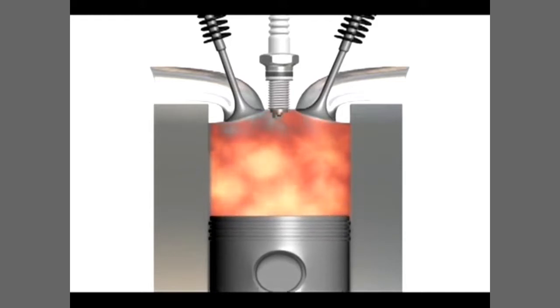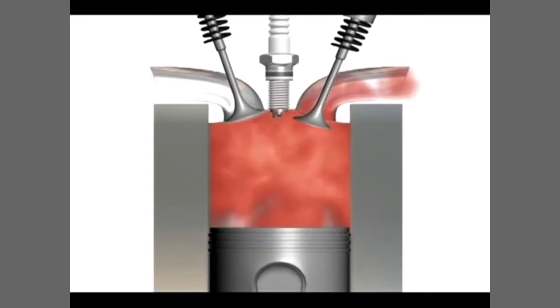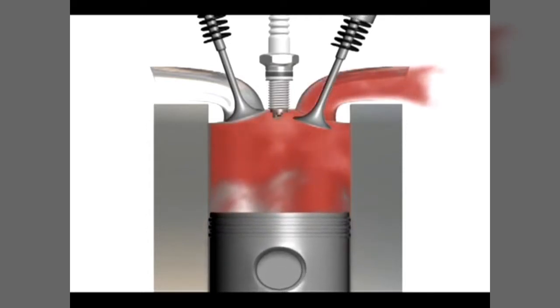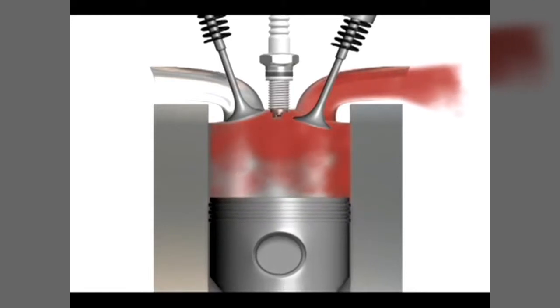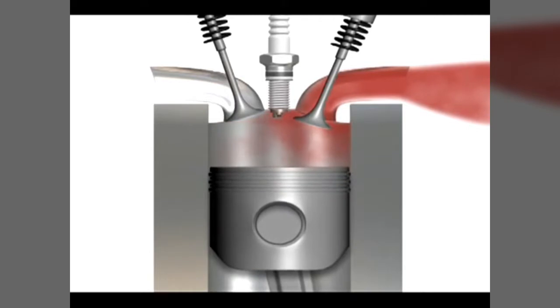This is called the power stroke. The fourth stroke is the exhaust stroke. As the piston begins its second upward stroke, the exhaust valve opens and the burned air-fuel mixture is forced out of the combustion chamber through the exhaust valves.